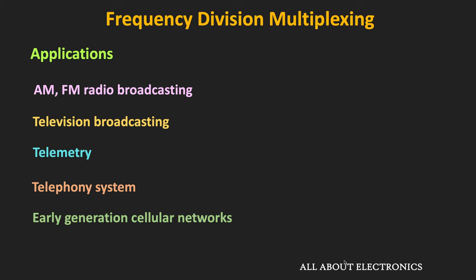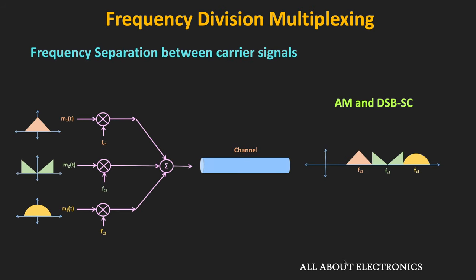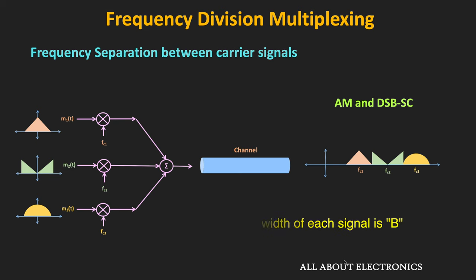In this multiplexing technique, to avoid interference and overlapping of two message signals, there should be enough separation between the two carrier signals. In case of conventional AM and DSBSC (double sideband) modulation, the bandwidth of the modulated signal is twice the bandwidth of the message signal. If we assume all message signals have the same bandwidth B, then in case of AM and DSBSC, the minimum separation required between the two carriers is equal to 2B.